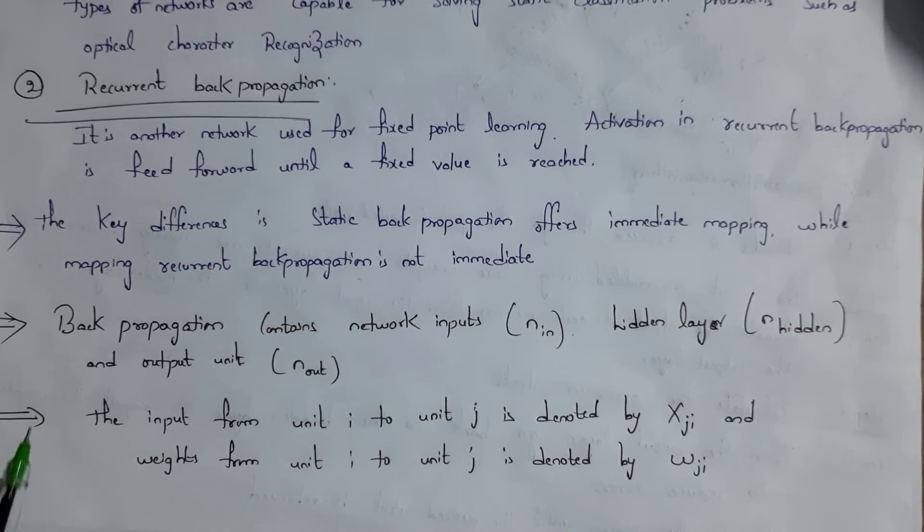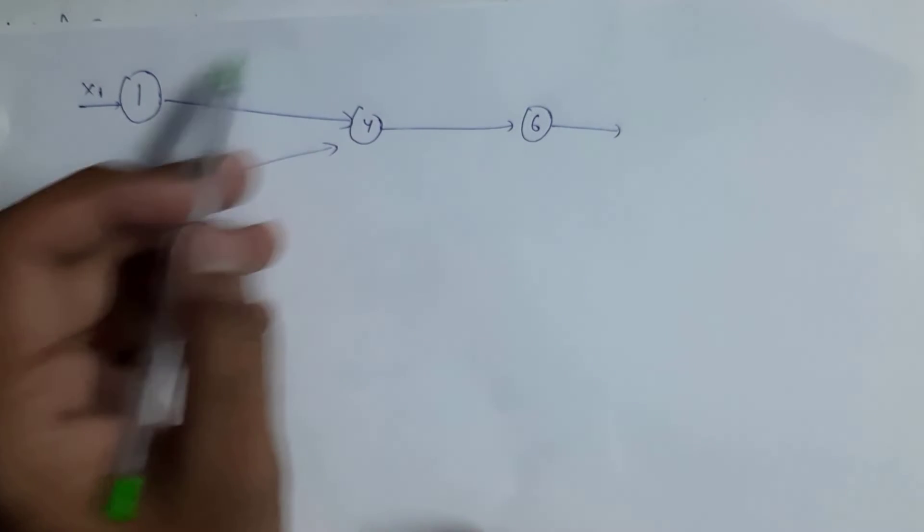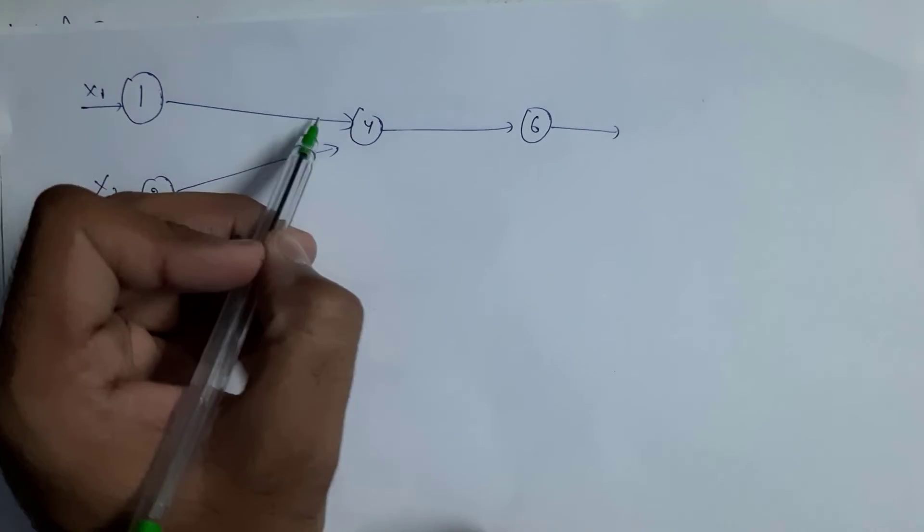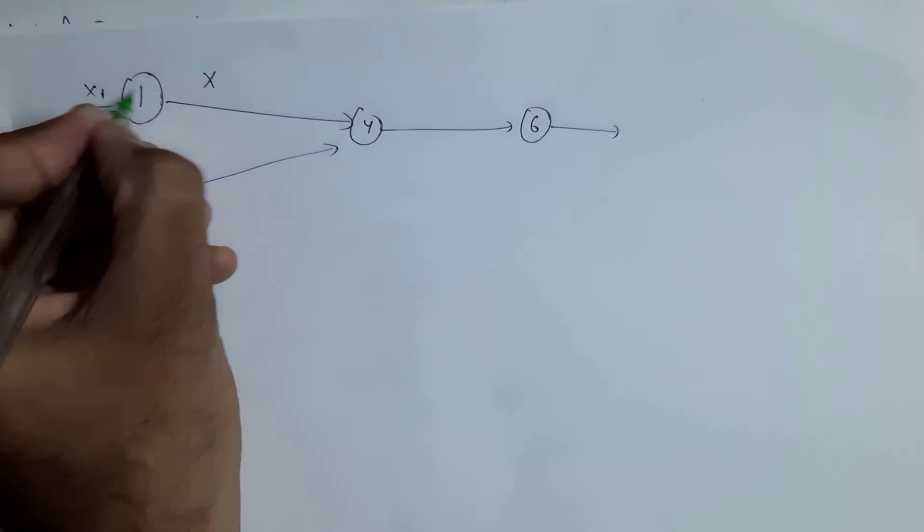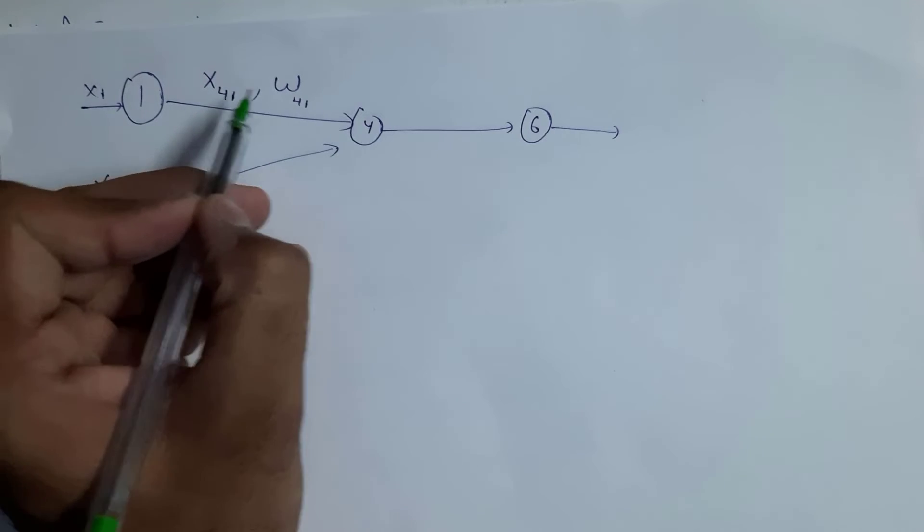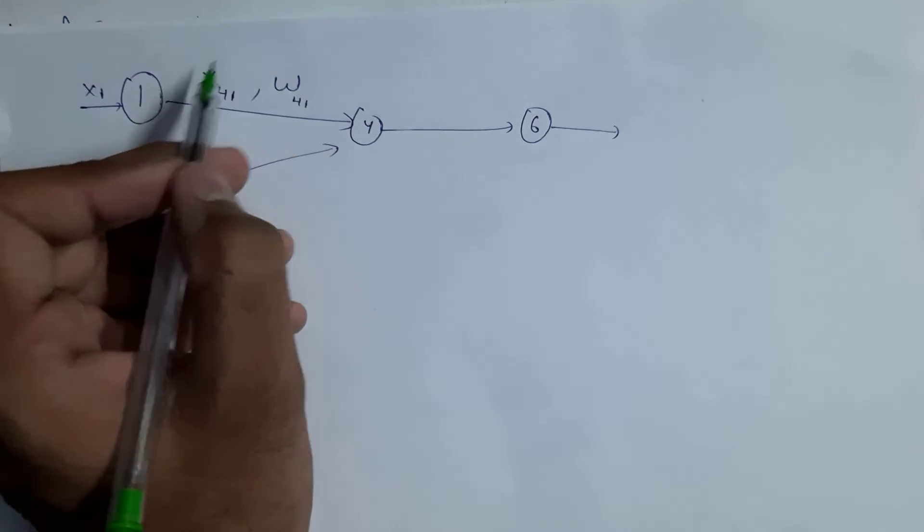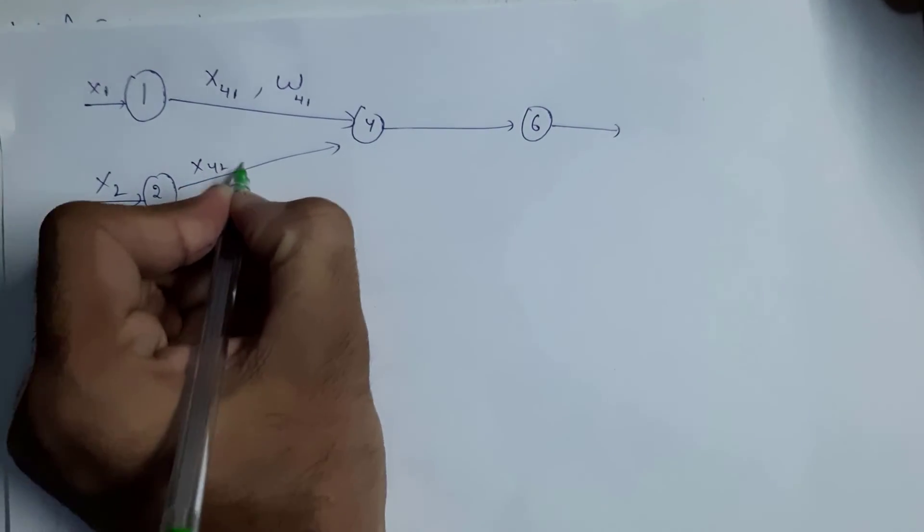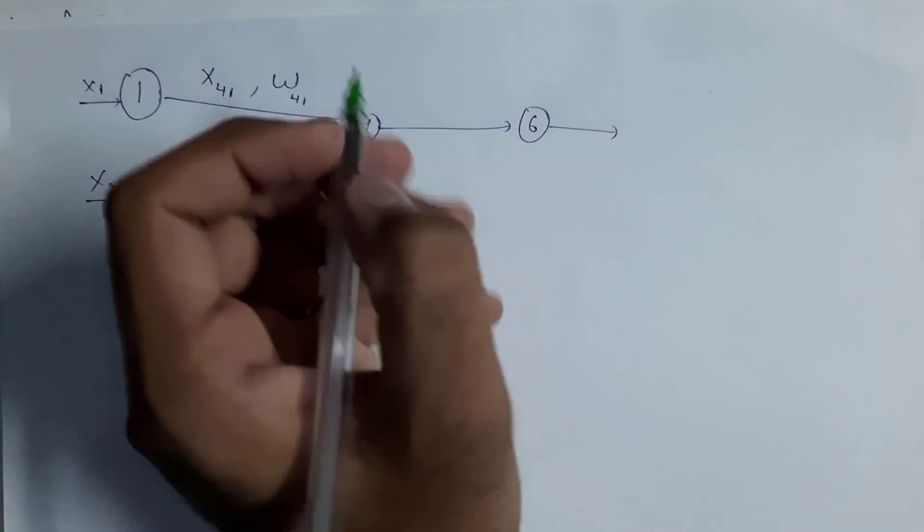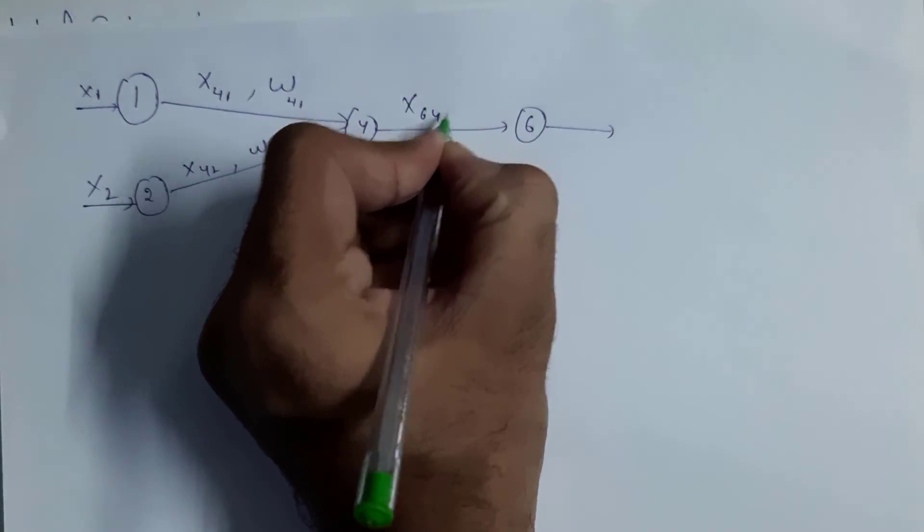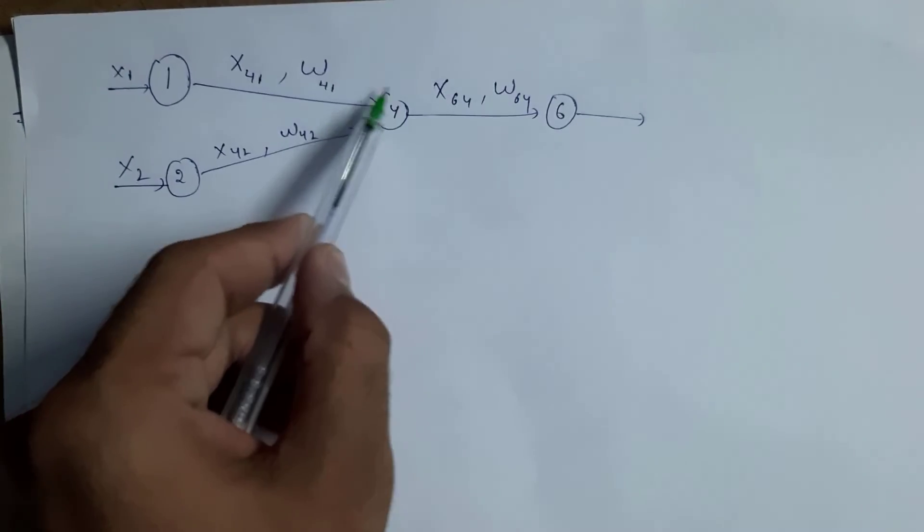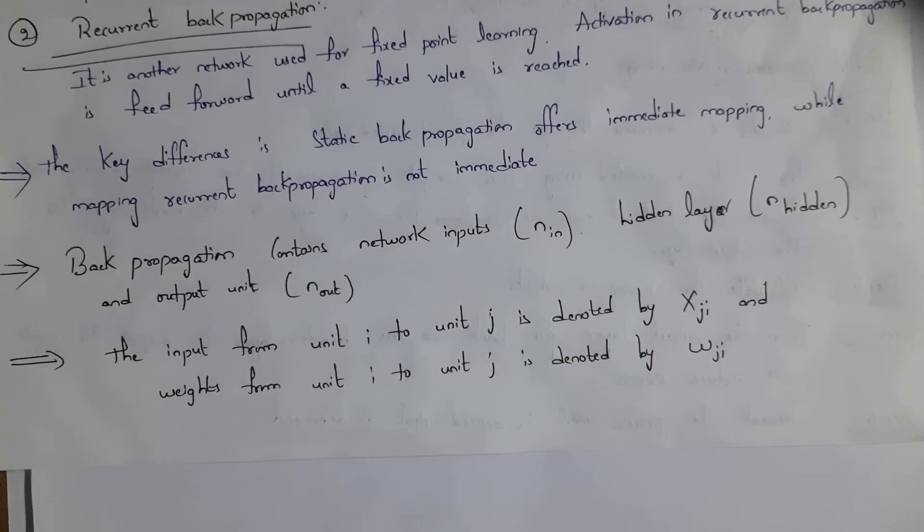I will give one example so that you can clearly understand. For example, this is a network. In this network, x1 and x2 are inputs. Now I am transferring this input from vector 1 to vector 4. So I can denote this as x41, w41. You should write in reverse manner, that is from 4 to 1, where x41 is input and w41 is weights associated with this input. Similarly, this x42, w42, where x is input and w is weight. From vector 4 to vector 6, we can denote it as x64, w64. In this, vector 1 and vector 2 are input layers. Vector 4 is hidden layer and vector 6 is output layer.